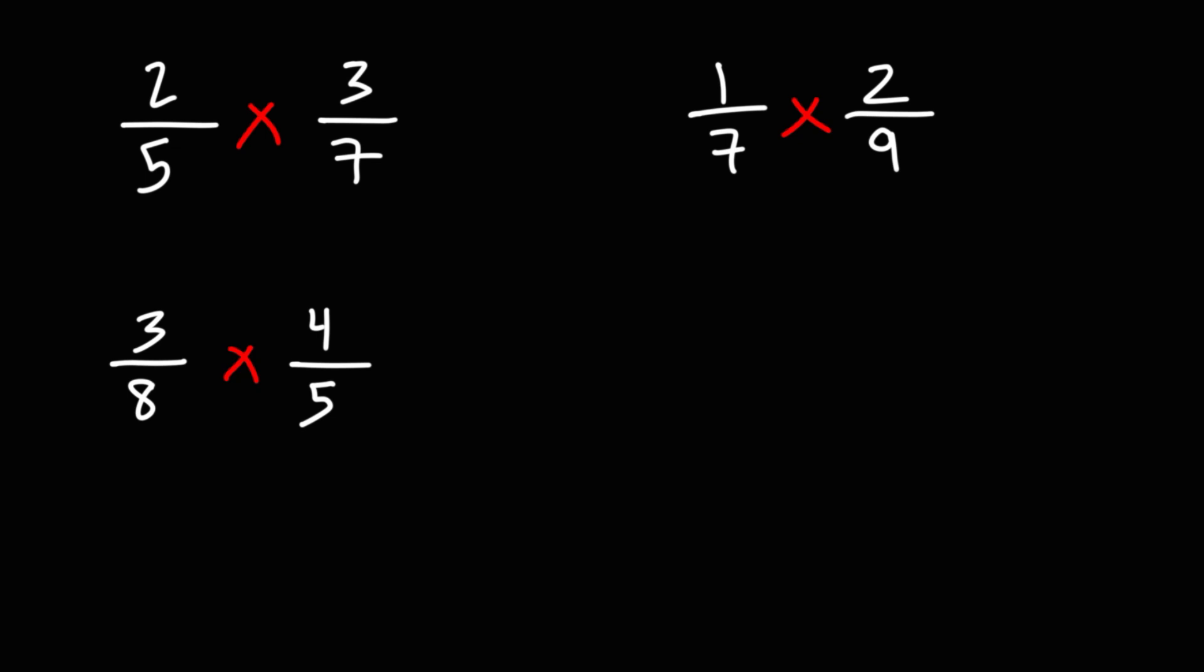To multiply two fractions together, what you need to do is multiply across. 2 times 3 is 6. 5 times 7 is 35. So the answer for the first example is 6 over 35.